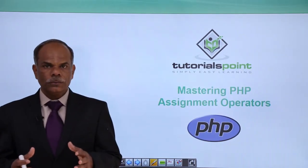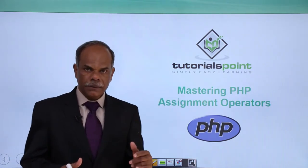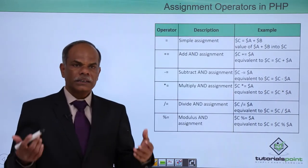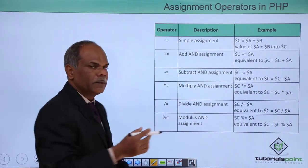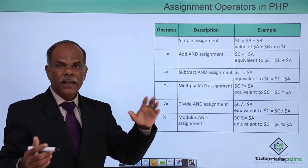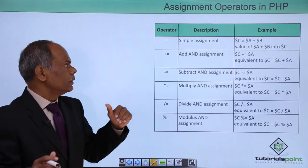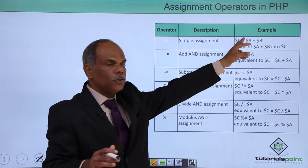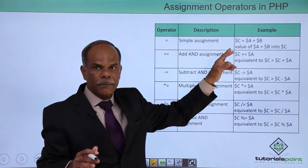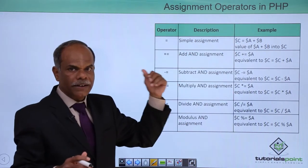Hello friends. In this video I will explain the different assignment operators in PHP. Apart from the first, which is a simple assignment we have seen used right from the beginning, it assigns the value of an expression on the right hand side to the variable on the left hand side. So if I have dollar c equal to dollar a plus dollar b, the addition of a and b will be done and the result will be assigned to c.